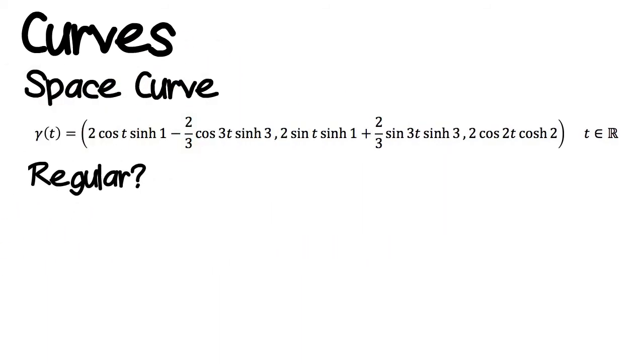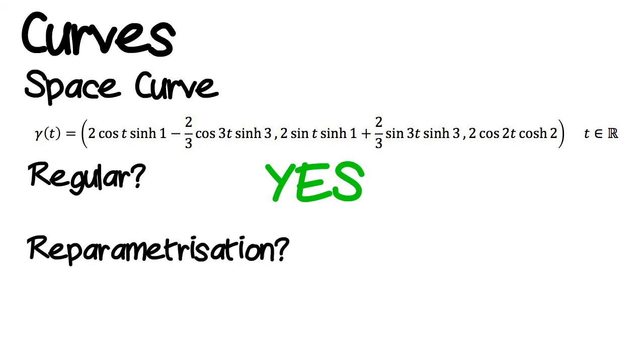Having looked at plane curves, we can now move on to space curves. A space curve is in three dimensions. Again, from the equation of gamma, we can look at many of the different properties that the curve has. The curve gamma is again a regular curve. The process to check if a space curve is regular is identical to checking if a plane curve is regular. And again, we are unable to re-parameterise our space curve for the same reason as our plane curve.